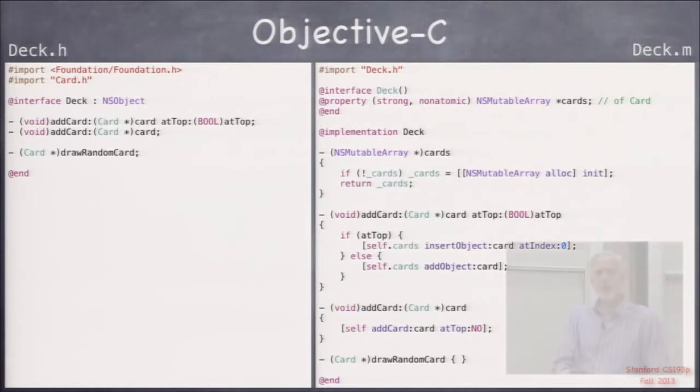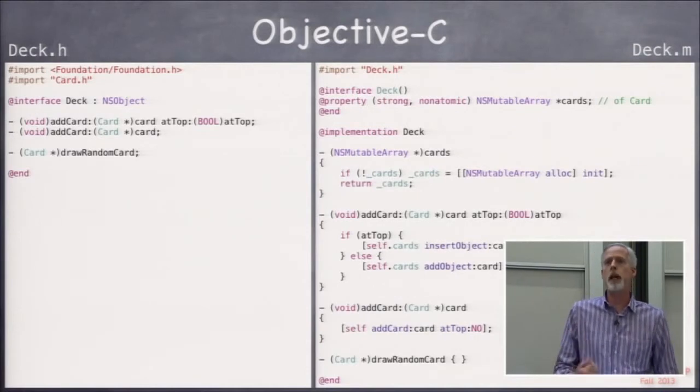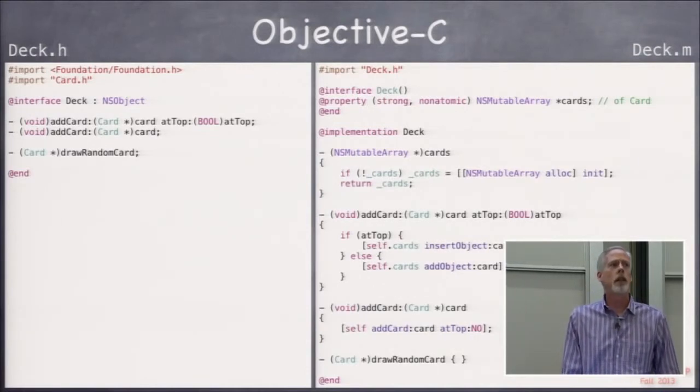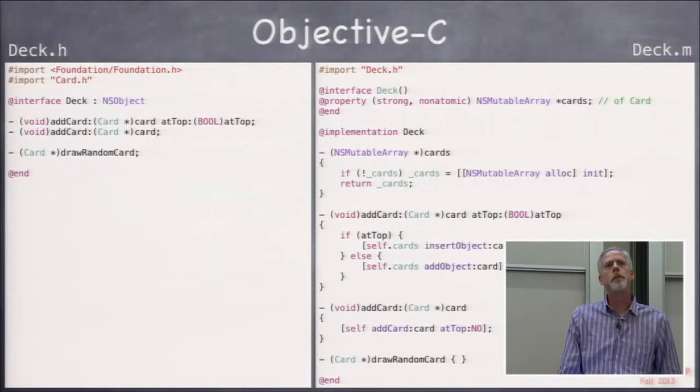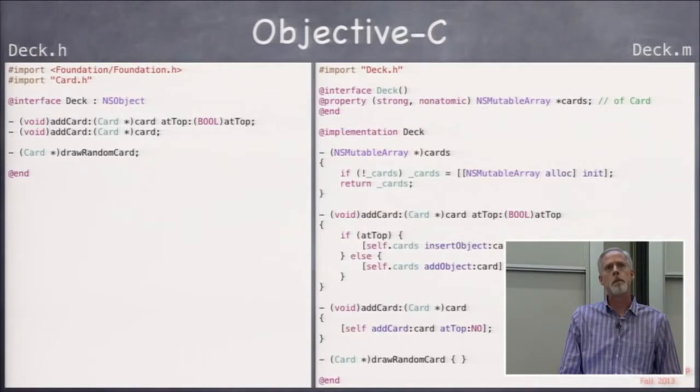This way, every single time you call self.cards, you can be sure that it's not nil. It's at least going to be an empty array. Instead of having this initialization code be in this getter, why don't I make an initializer, like an init for deck, and put this inside deck? That is another option. We're going to see an initializer for playing card deck.